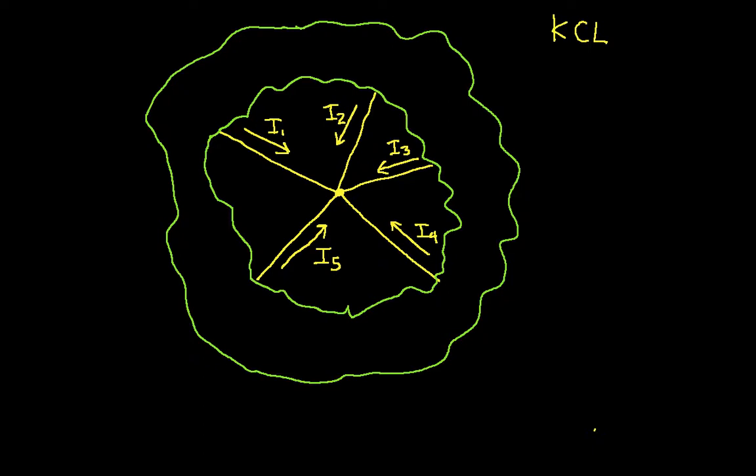We'll start the explanation by looking at this kind of strange diagram that I've drawn here. This guy here is a node in some circuit, and the funny green stuff is what we would call the rest of the circuit.